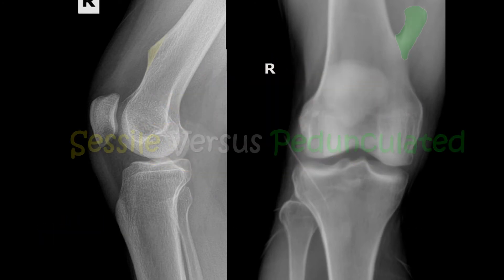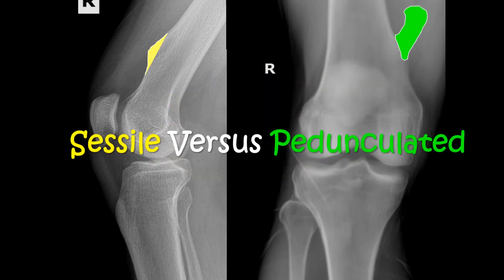There are two different types of osteochondromas: sessile and pedunculated. Sessile is like a small hill, versus pedunculated which is like a cauliflower-like stalk or a mushroom cap. A helpful way to remember it: if you could tie an imaginary string around it and it would stay, it's likely pedunculated; if it fell off, that would be sessile.